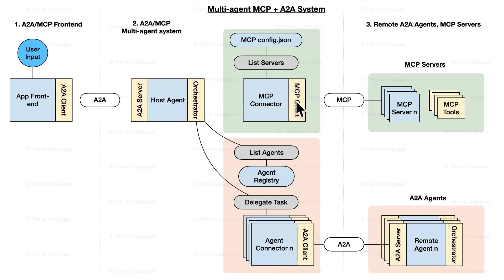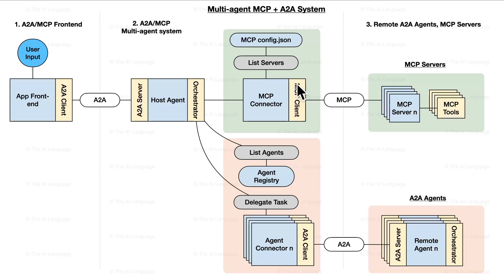This will help you clear this particular branch and understand how MCP works. One more thing we'll do is connect MCP clients to multiple MCP servers. We'll have a config.json file where the MCP client can list all the servers and then connect to multiple MCP servers. This is going to complete the MCP part of our course.